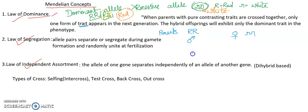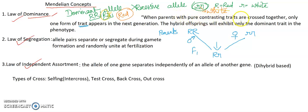Agar hum F1 generation ki baat karein, F1 generation mein capital R small r banega, kyunki ek allele yahan se aa raha, aur doosra allele yahan se aa raha. Toh is law ko samjhane ke liye thoda sa cross batana pada, although yeh monohybrid cross ka part hai — hum log ek detail discussion karenge ek video mein monohybrid aur dihybrid ke baare mein. When the parents with the pure contrasting traits are crossed together, only one form of trait appears in the next generation.